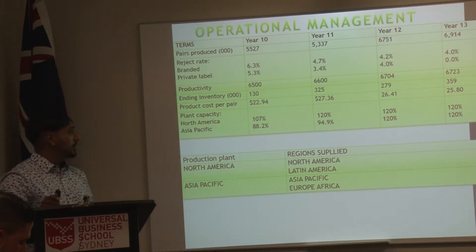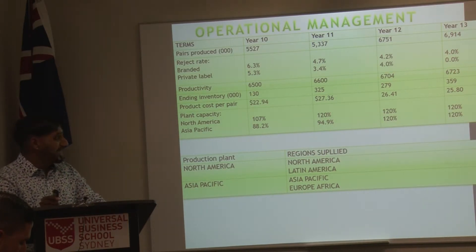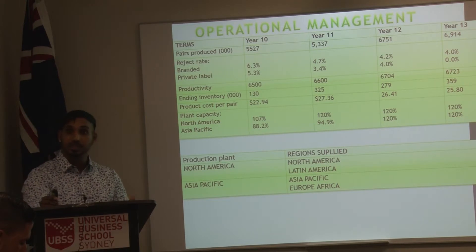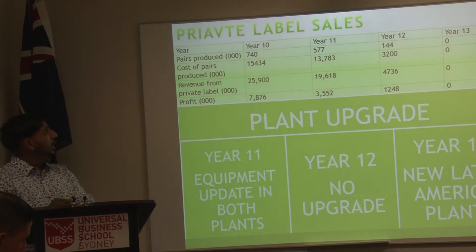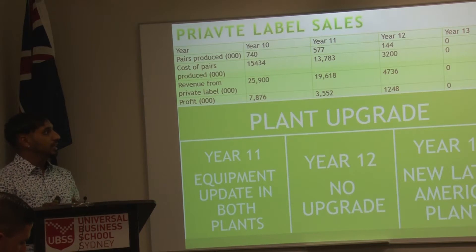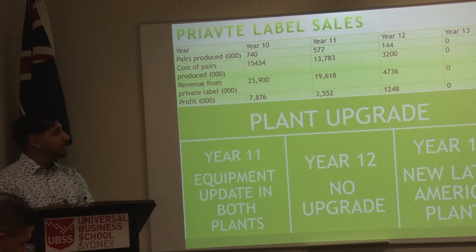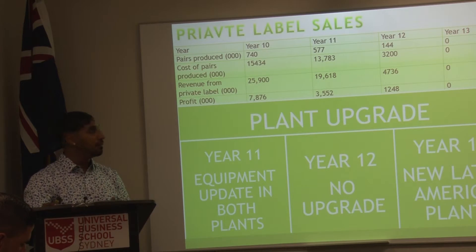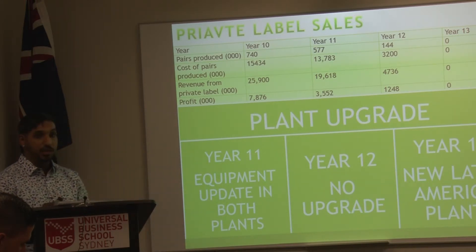As we can see, we are using full capacity of both plants in North America and Asia-Pacific, which is 100% of plant capacity plus 20% for overtime. With private labeling, demand has been decreasing every year because of higher demand for brand labeling, so we decided to reduce private labeling in year 13, resulting in zero sales under private labeling.